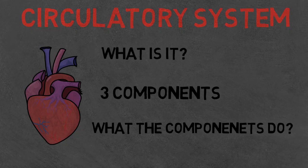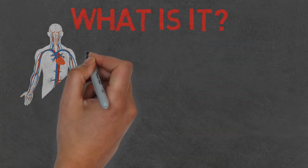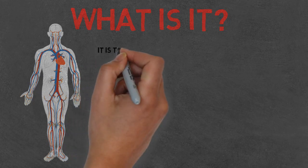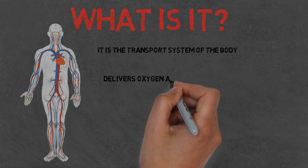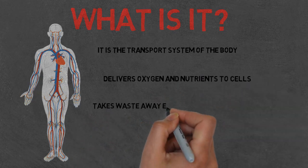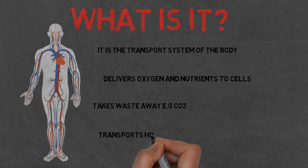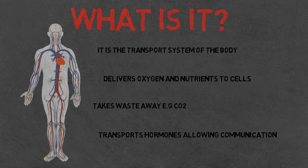Let's look at what it is first. The circulatory system is the transport system of the body, delivering oxygen and nutrients to the cells. It takes away waste such as carbon dioxide back to the lungs where it can then be expired out of the body. It transports hormones allowing communication to occur between body parts. Without this your body couldn't say, hey pancreas, produce more insulin to convert glucose into glycogen which can then be stored in the liver.